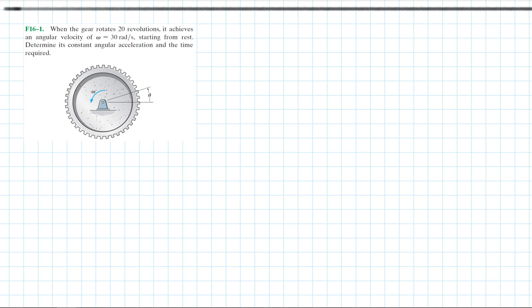In this problem, we have a gear that rotates 20 revolutions and achieves an angular velocity of omega equal to 30 radians per second, starting from rest. We need to determine its constant angular acceleration and the time required.